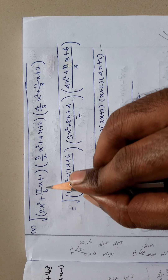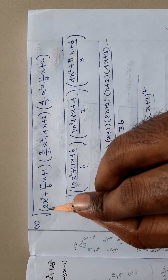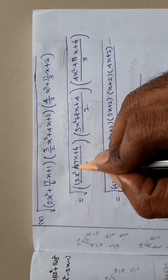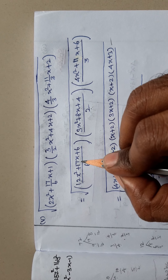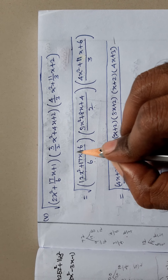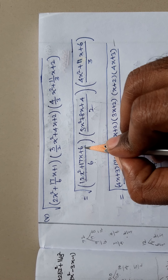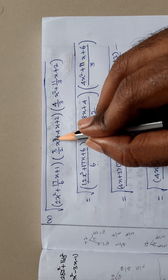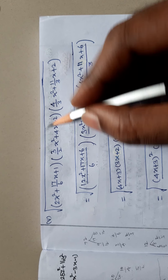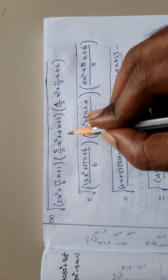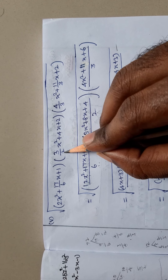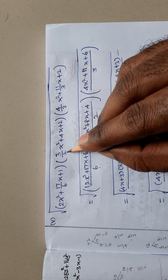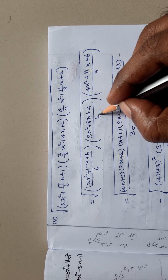First, we take LCM here. So, 6 into 2 gives 12x squared plus 17x plus 6, divided by 6. Next, here also taking LCM. So, 3x squared as it is, 4 into 2 gives 8, so 8x plus 2 into 2, divided by 4 by 2.